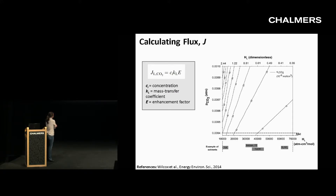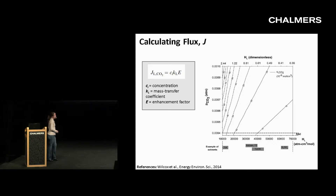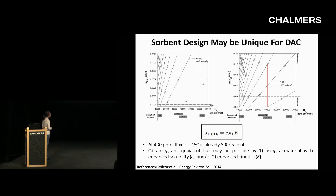From a paper published in 2014, this plot shows the partial pressure of CO2 — in the atmosphere around 400 ppm. These grid lines are the concentration of CO2 at the interface of the gas and the liquid. The x-axis shows the Henry's Law quantities for different types of chemicals used for the separation process. Comparing two examples: on the left, direct air capture; on the right, coal-fired flue gas. Because coal-fired flue gas is 300 times more concentrated than CO2 in air, these are shown on different plots.